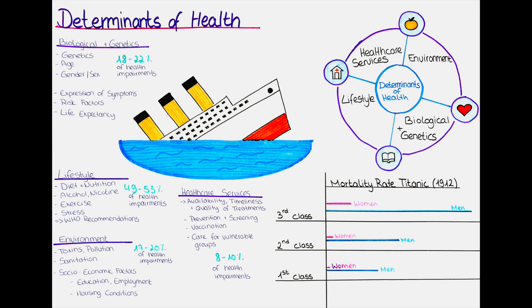Women are also more likely to have a stroke at an older age than men, and they may have different symptoms, such as confusion, disorientation and loss of consciousness. Men may experience more traditional symptoms, such as weakness or numbness on one side of the body.